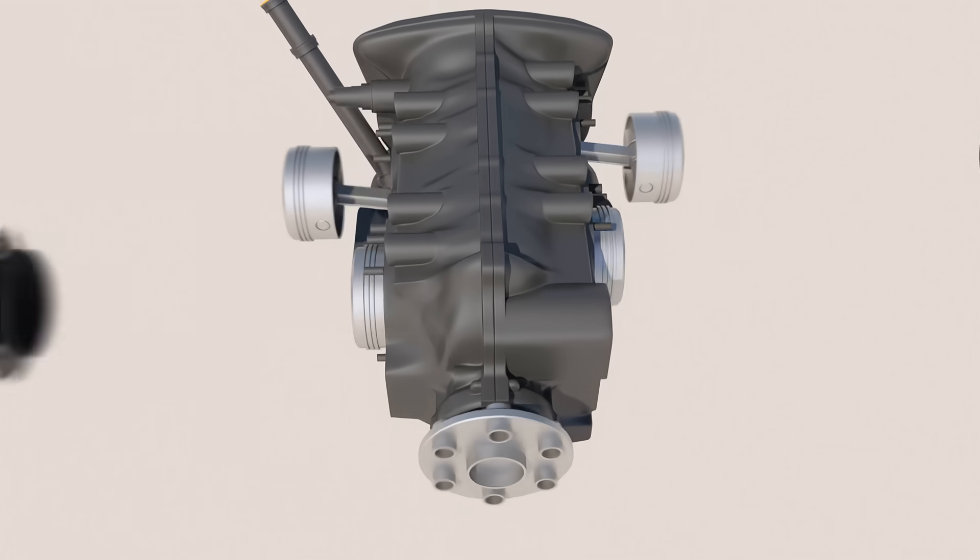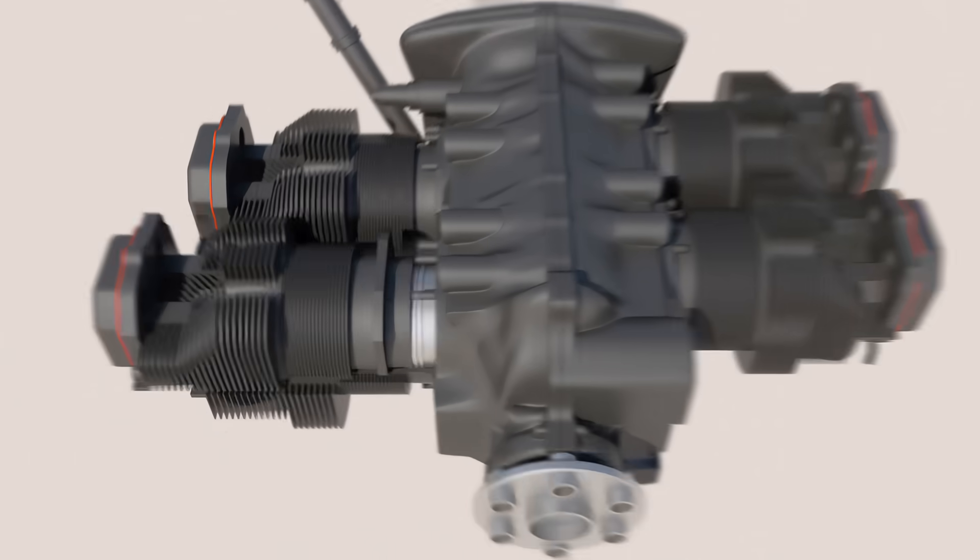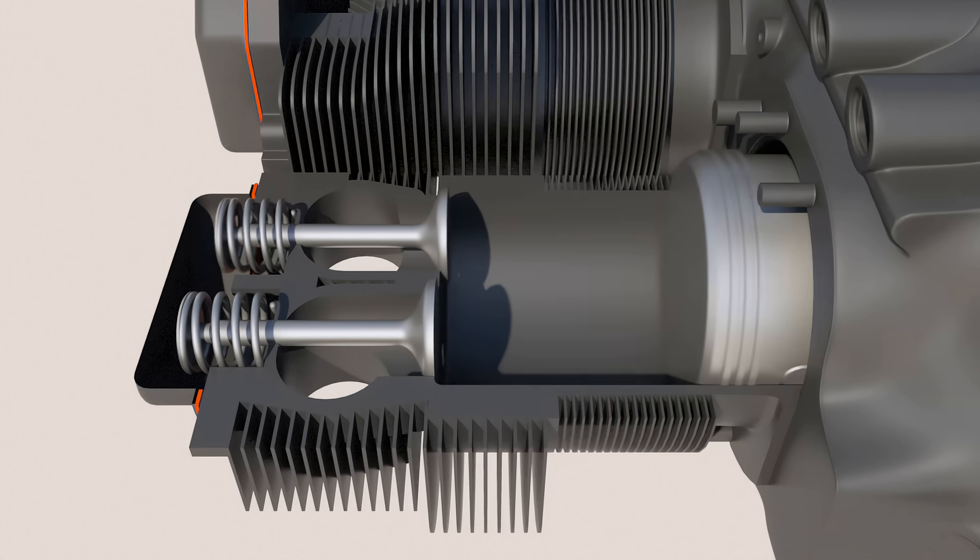Reciprocating engines have several cylinders. Inside of those cylinders, fuel and air are mixed, compressed, and then ignited.